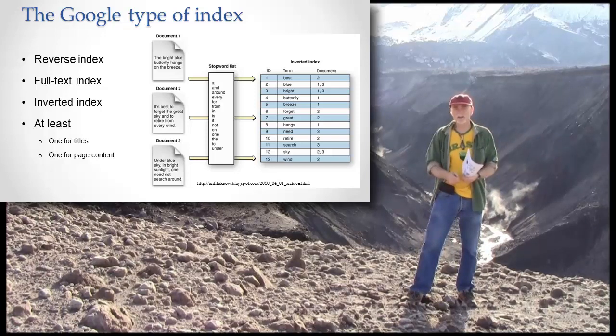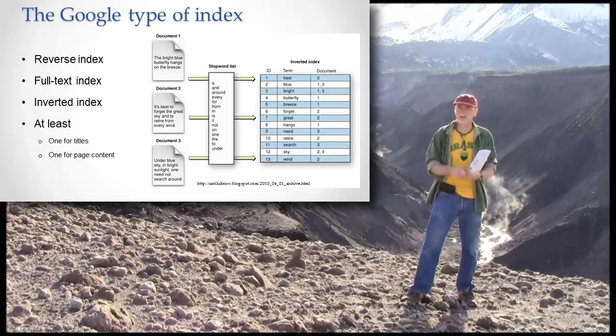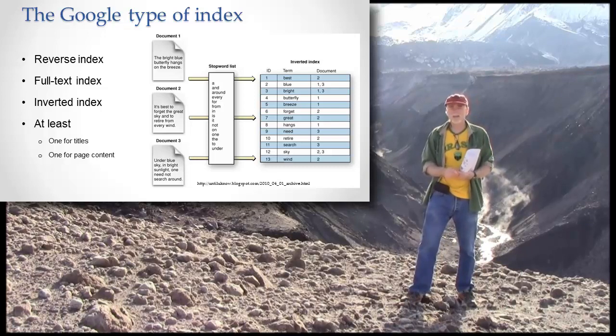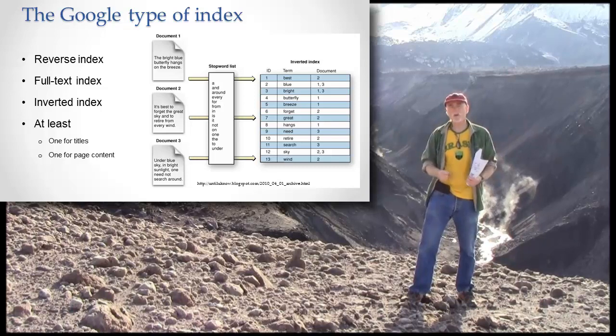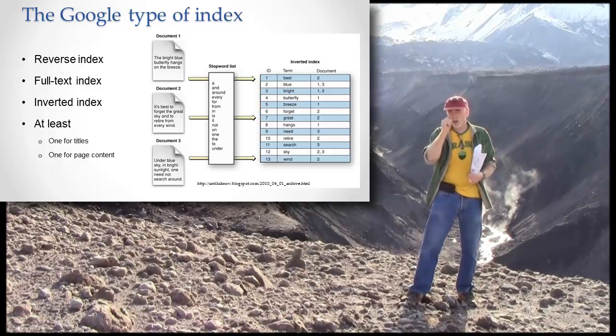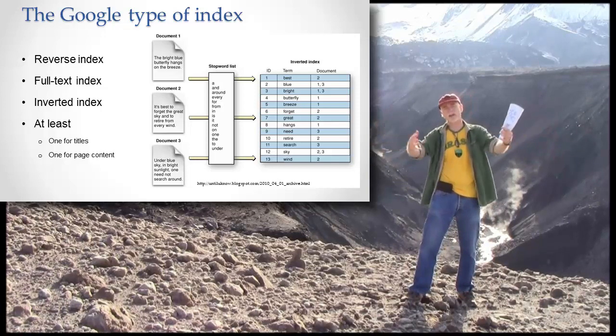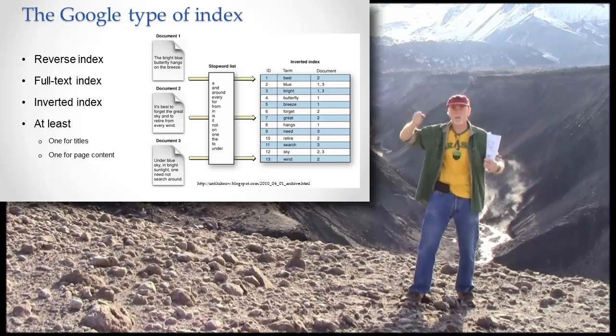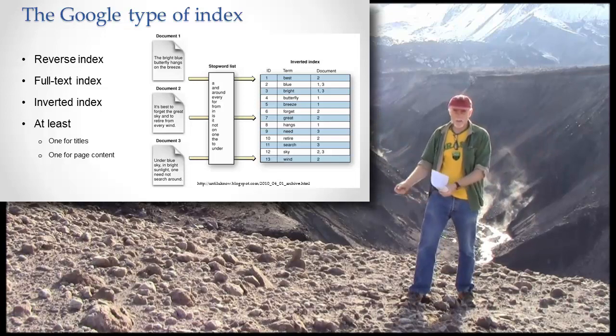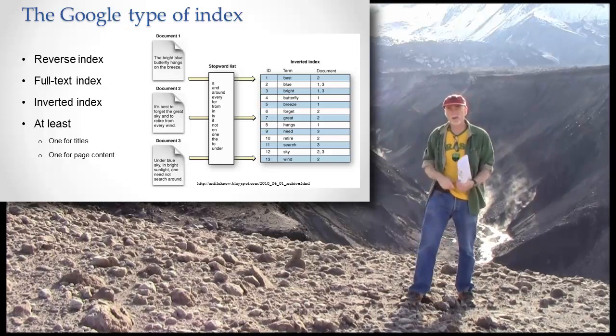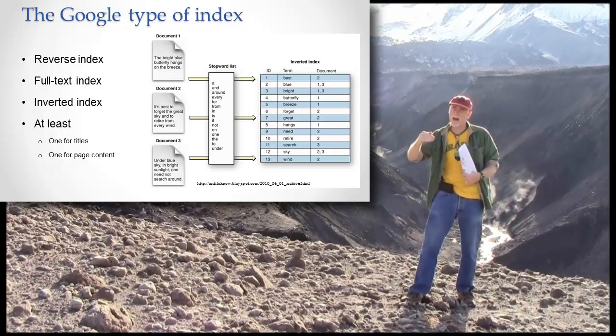The way to think about how this Google index works is it takes every page that it indexes on the web, and we'll talk later about how it indexes those pages, but every page that's indexed by Google, it takes those and puts them in a big bag, shakes them up, and shakes all the words off of those pages. But as it shakes the words off of those pages, it notes what page it came from. Then it pours out that big pile full of words on the table and starts sorting them out alphabetically until every word on every page is in order alphabetically.